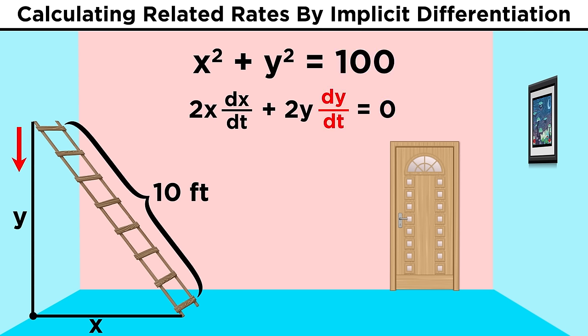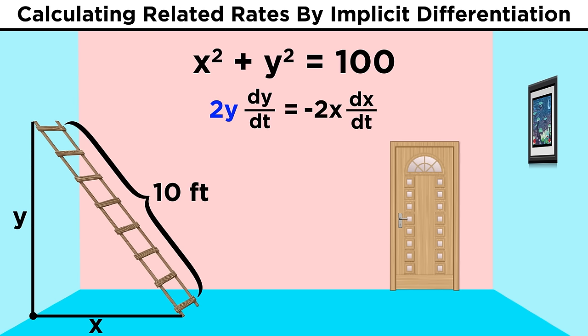Now we want to know about how fast the ladder is sliding down the wall, which is described by dy over dt, so let's solve for dy over dt. We take the term with all the x's to the other side, and then we divide by two y, and we get negative x over y times dx over dt.